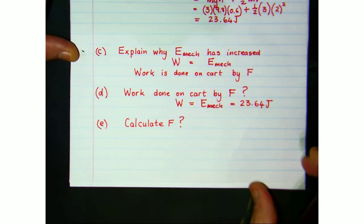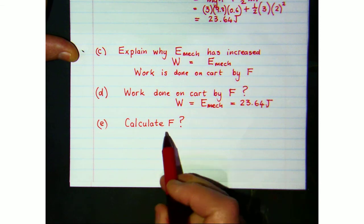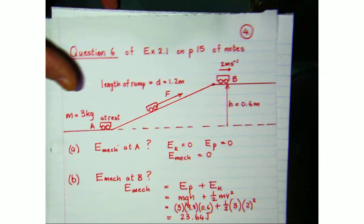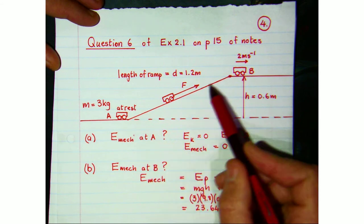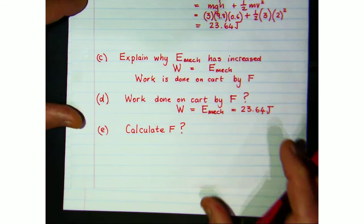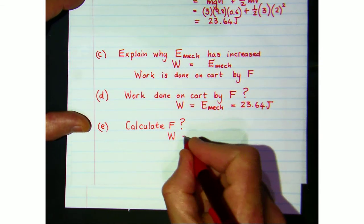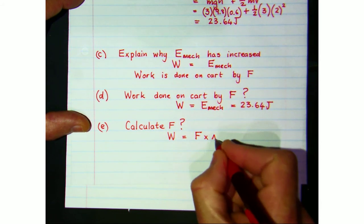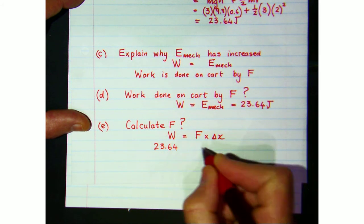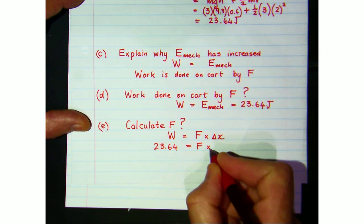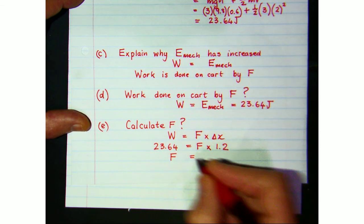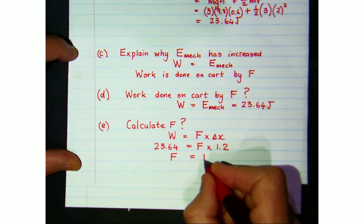The last question asks for the magnitude of force F. The force F acts along the distance of 1.2 meters. Using the formula for work: W = F × d, we know 23.64 joules of work was done and the force acted over 1.2 meters. Solving for F gives an answer of 19.7 newtons.